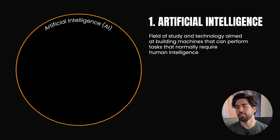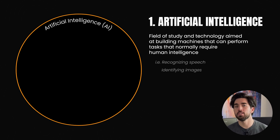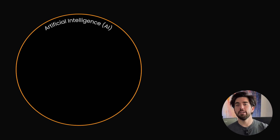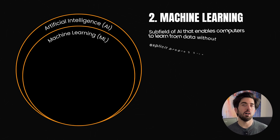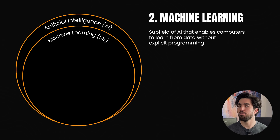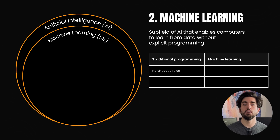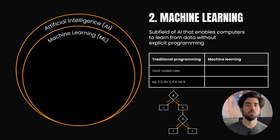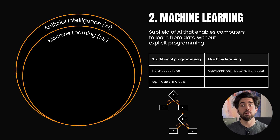When we say AI, we mean a whole field of study and technology aimed at building machines that can perform tasks that normally require human intelligence, such as recognizing speech, identifying images, or making decisions. Within AI, there's a subfield called machine learning, which is all about teaching computers to learn from data without you programming every single rule. Traditionally, people would hard-code everything — like "if A do B, if X do Y" — but machine learning flips that by letting algorithms digest data and learn these patterns themselves, which allows us to scale to much more complex patterns than a few if-then statements.